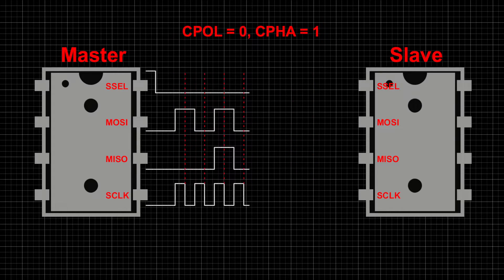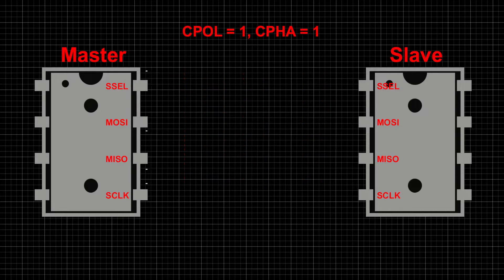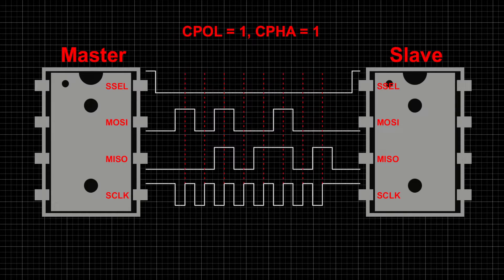When clock phase is one and clock polarity is zero, the bits are sampled on the second clock transition. Since the clock polarity is zero, the first transition is the rising edge, therefore bits are sampled on falling edges. When both clock phase and polarity are set to 1, the bits are sampled on the second clock transition — since the first transition will be the falling edge, the bits will be sampled on the rising edges of the clock.